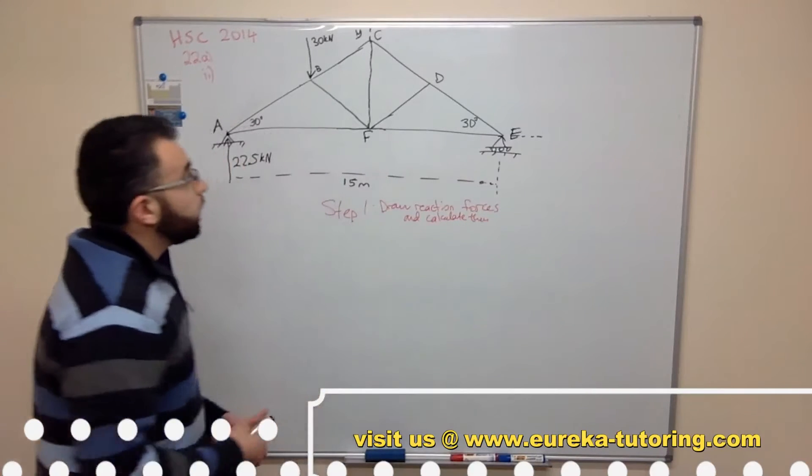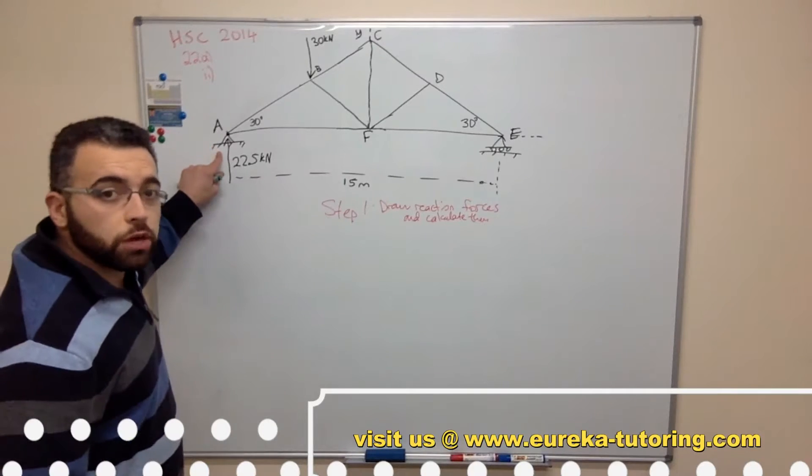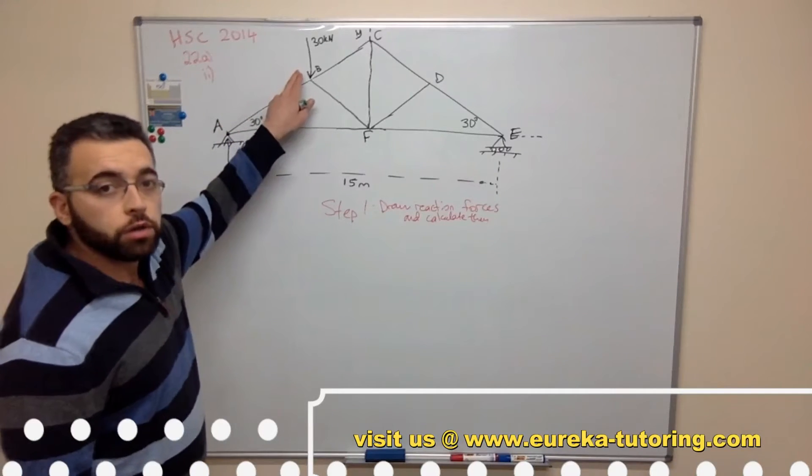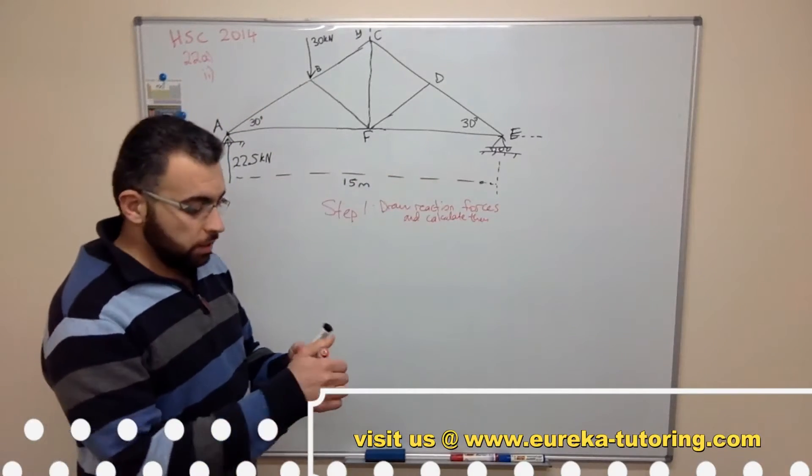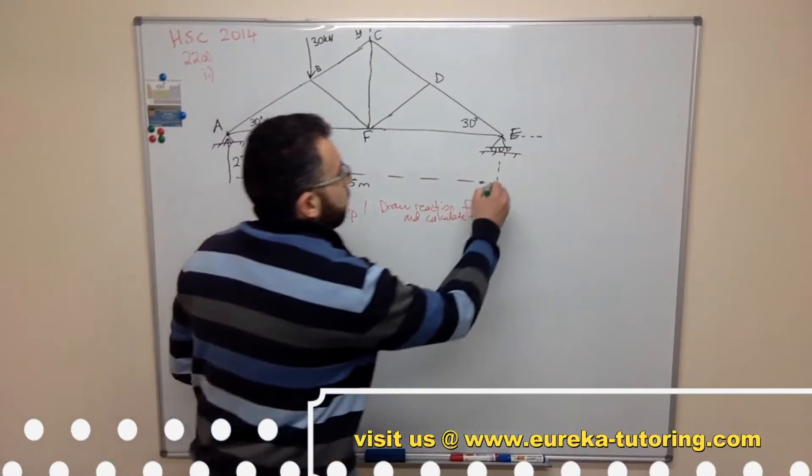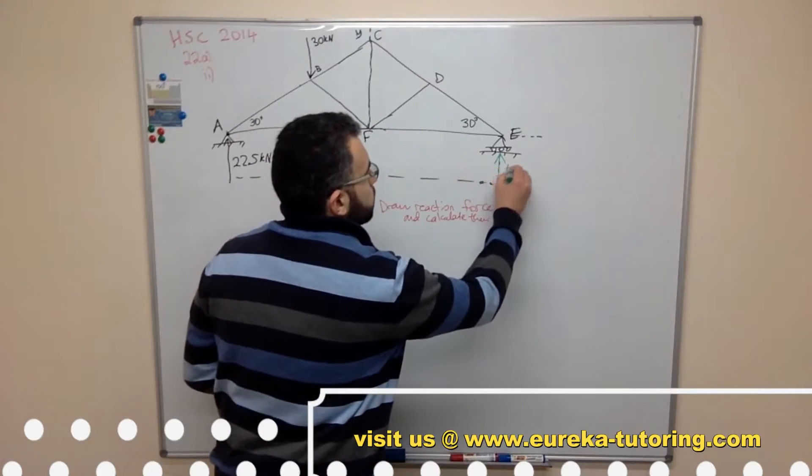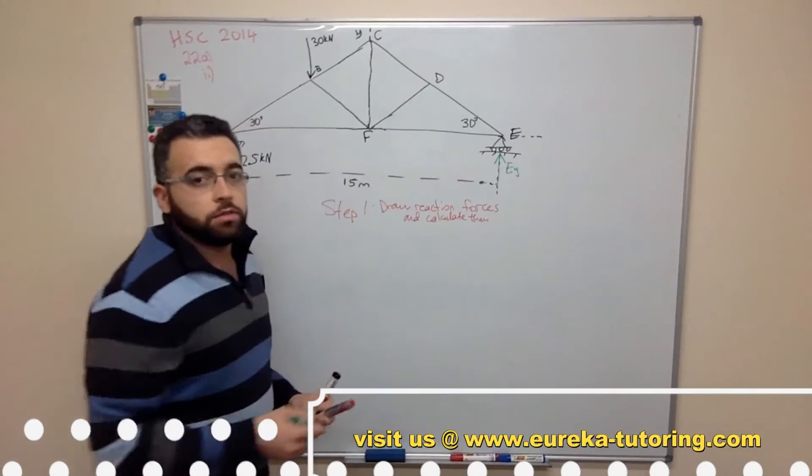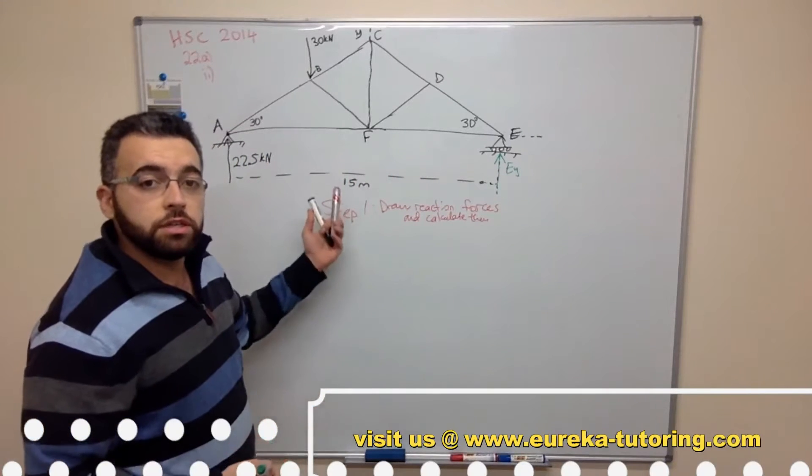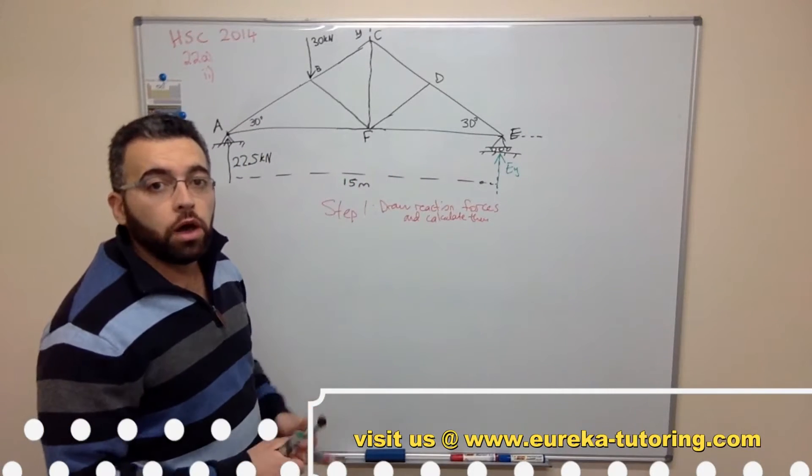So we know that we have a force in the vertical direction, another force in the vertical direction, and another force in the vertical direction which is our unknown. And of course the roller force - there's only one force and that's going in the vertical direction. So we can easily use here sum of forces in the y or vertical direction.